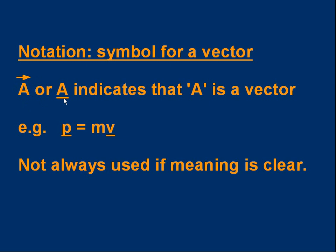Another way of doing it is simply to use an underlined letter, and that distinguishes vectors from scalars which don't have arrows or underlines. For example, you know the equation for momentum: p equals mv. Strictly speaking, this is a vector equation, so we should write p underlined or p with an arrow. So p underlined equals m times v underlined — p (momentum) and v (velocity) are vectors, we underline them to indicate that. Mass is a scalar; it doesn't need any underlining. Note that the notation is not always used if the meaning is clear, and you are expected to use common sense in deciding whether something is a vector or a scalar.